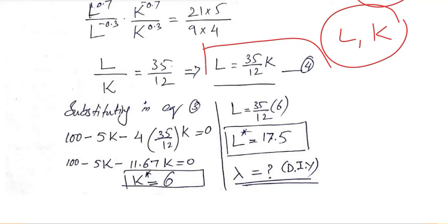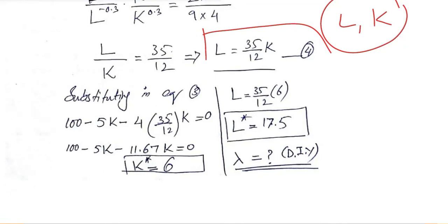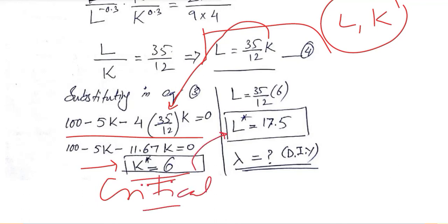Substituting in equation three, now this value from equation number four can be substituted in equation number three where there was no lambda and there was only x and y in this case which are represented with labor and capital. So the value of labor is substituted here and now we have the value of capital, the critical value, and this critical value can be used further to find the value of lambda, the critical value of labor.